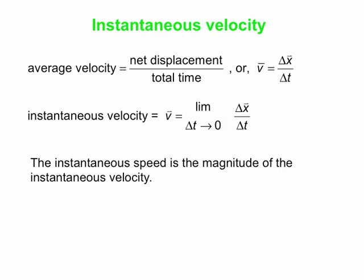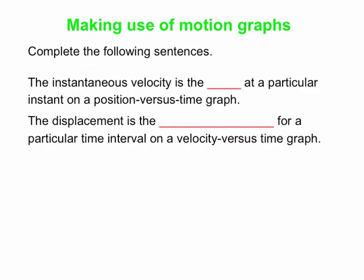This is a complicated definition of instantaneous velocity, so we're going to do this another way using graphs. On a position versus time graph, the instantaneous velocity is the slope at a particular instant. The magnitude of that slope gives the instantaneous speed. Similarly, we can find displacement from a velocity versus time graph — the displacement is the area under the curve for a particular time interval on a velocity versus time graph.